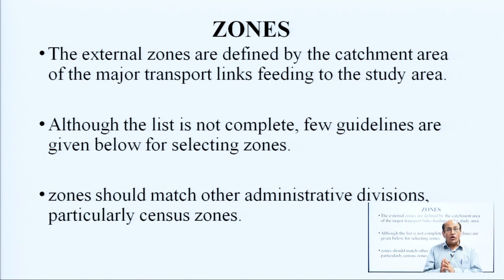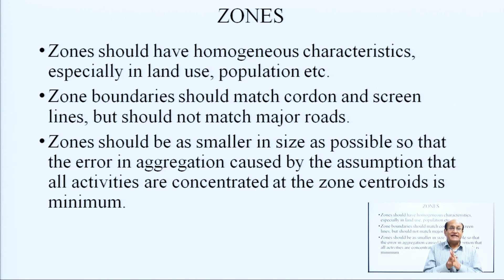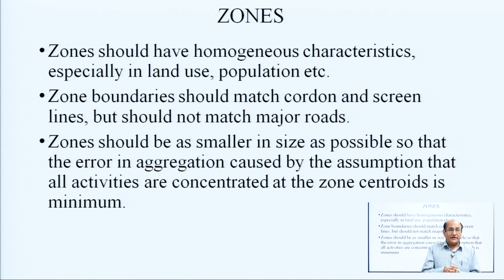Although the list is not complete, a few guidelines are given for selecting zones: zones should be matched with administrative divisions, particularly census zones; zones should be homogeneous in character, especially in land use and population; zone boundaries should match cordon and screen lines but should not match major roads; and zones should be as small as possible so that the error caused by the assumption that all activities are concentrated at the zone centroid is minimized.